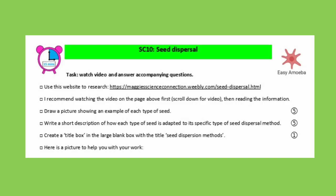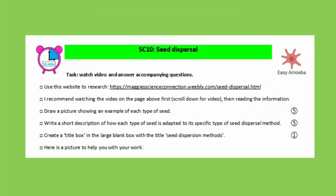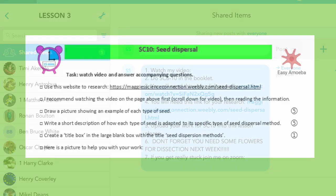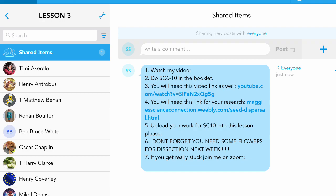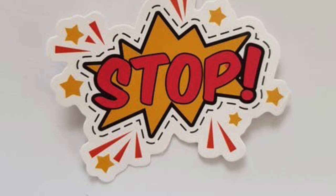We're going to move on to the very last task, which is SC10, also on seed dispersal. Your task is to fill in a grid with a space to draw a diagram for each method of seed dispersal and a space to write a short description. To get this right you need to carefully read the instructions. There's a link you'll need for research — I'll add this link to Showbie as well. I've also added a picture here to help inspire you. Pause here while you complete SC10.